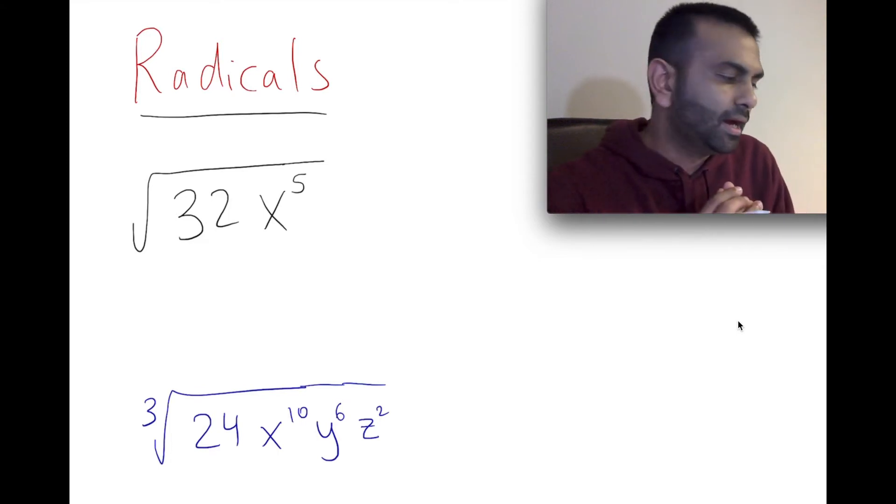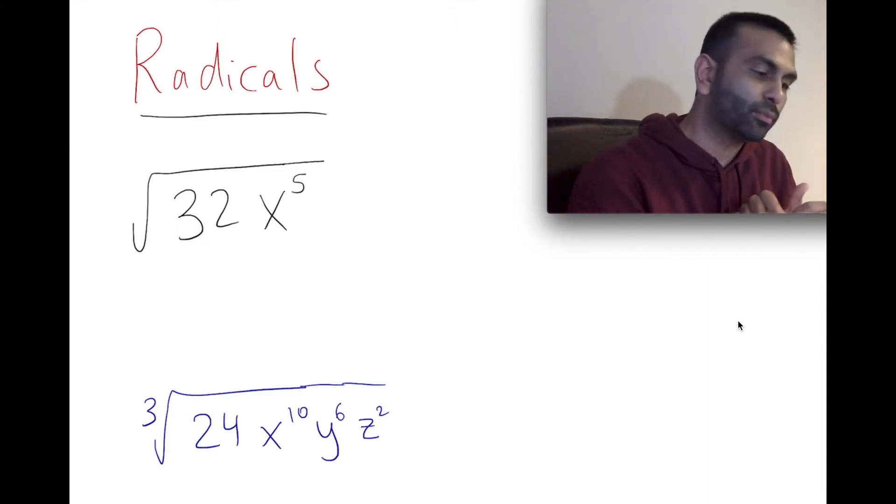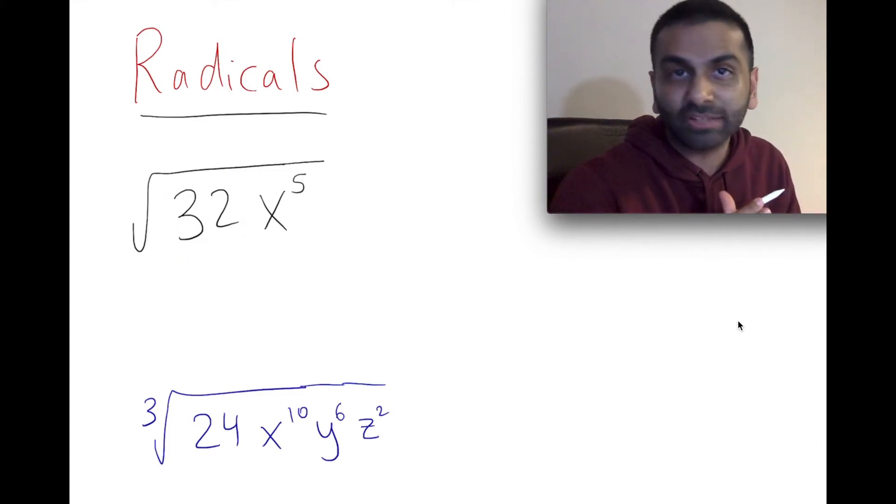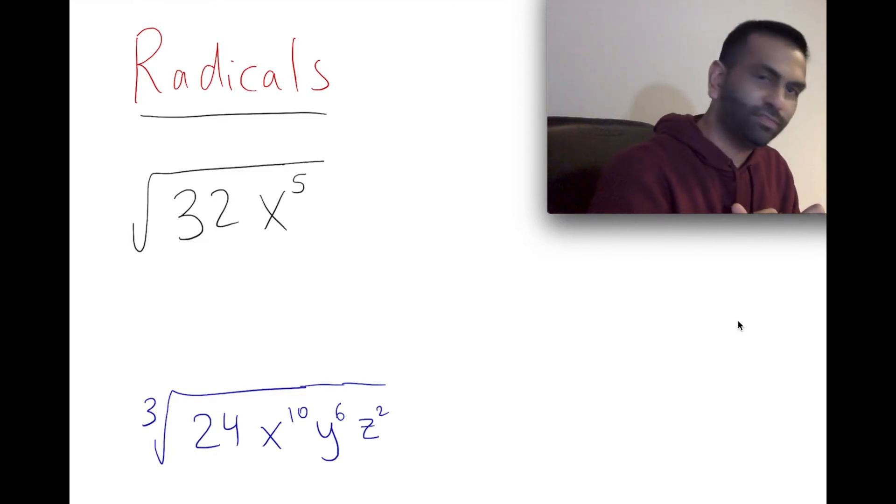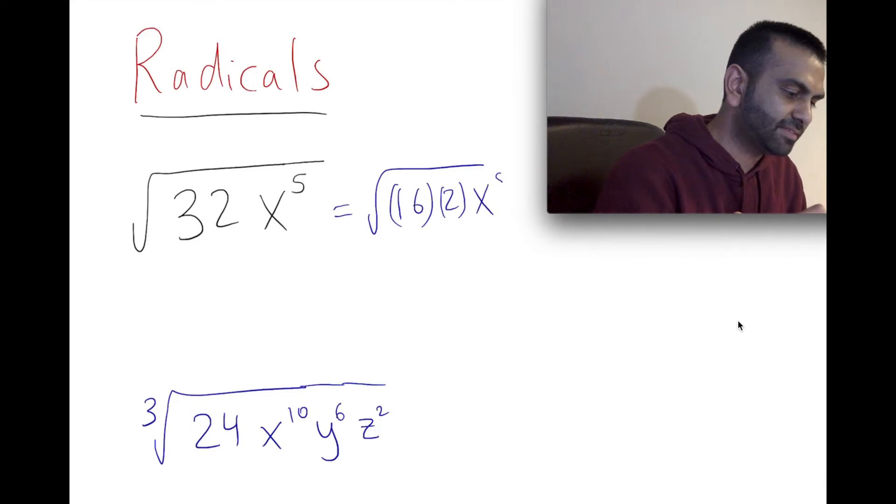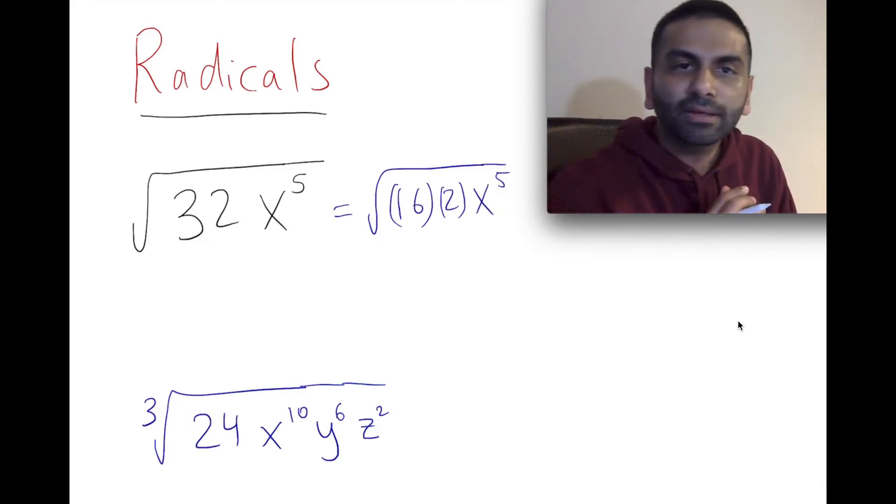Well, let's see. Perfect squares are 1, 4, 9. Right after that, 4 would work, right? 4 times 8. Another one that would work, probably even better, would be 16. 16 times 2 is 32, and 16 is 4 squared. So first of all, we could just rewrite this as root, and I'm just going to write this first as 16 times 2, and I'm just going to keep the x to the fifth as x to the fifth for now.